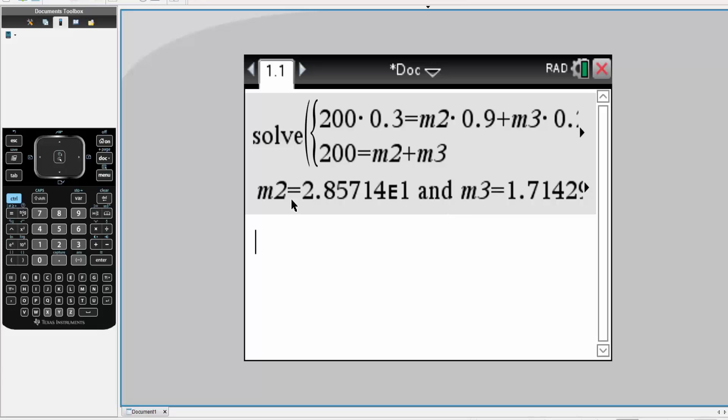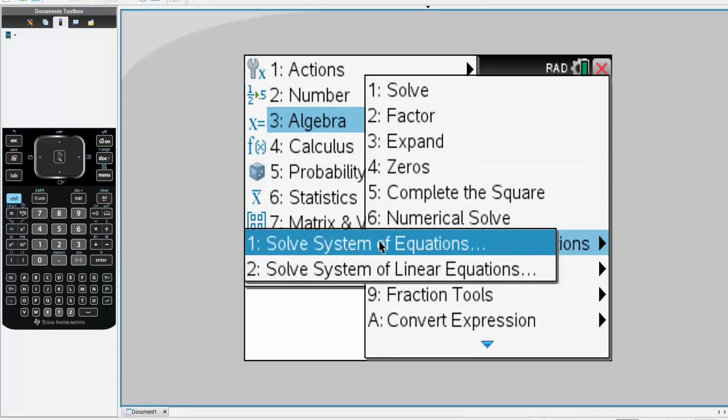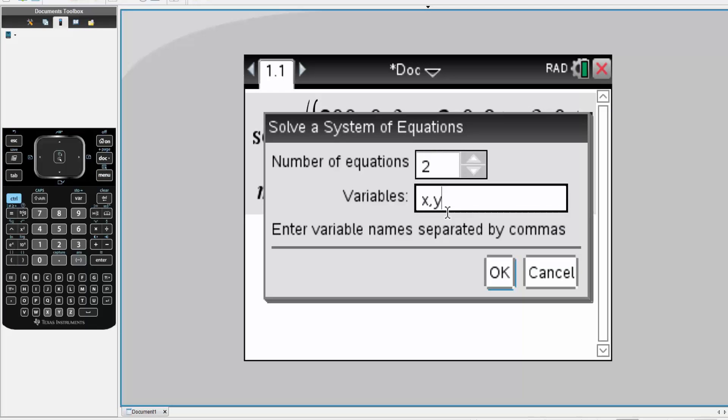We'll go back to the calculator. Menu, 3, 7, 1. Same thing. We're going to solve for M2, M3.